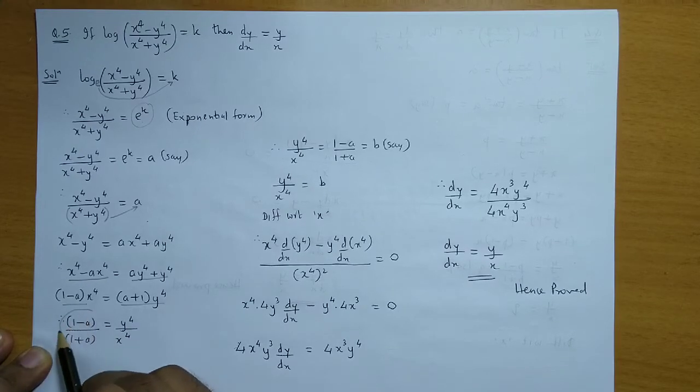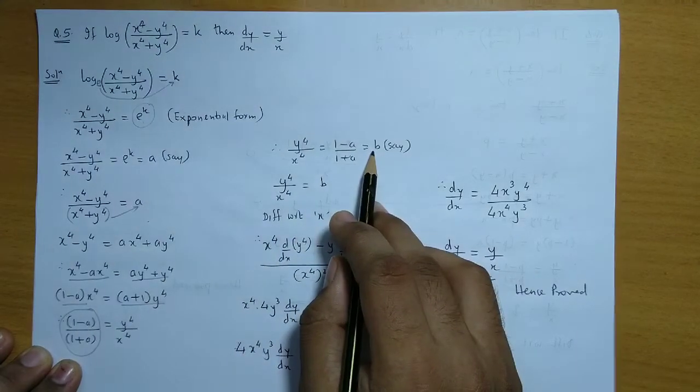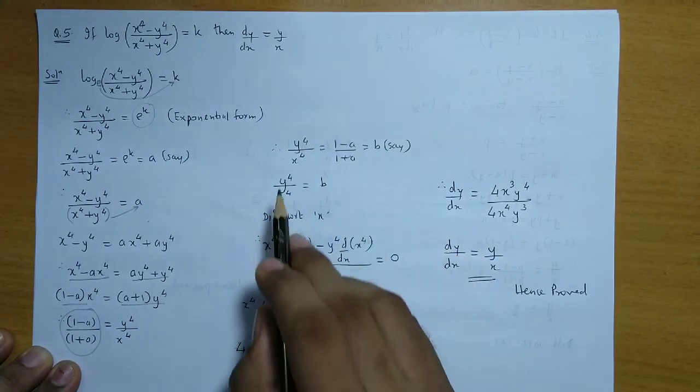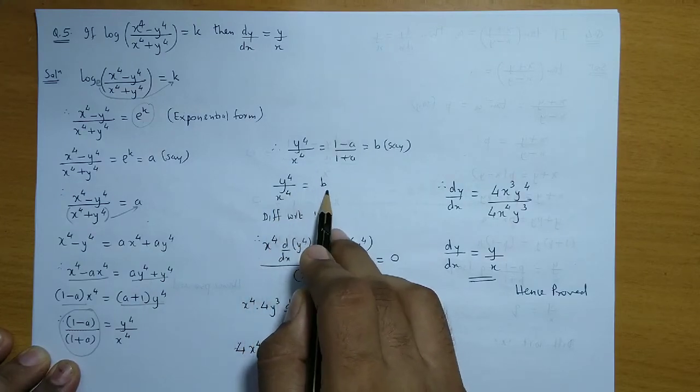Now again if you observe, (1 - a)/(1 + a) is a constant. So we give this constant a new name b. So finally what you get is y⁴/x⁴ is equal to b.